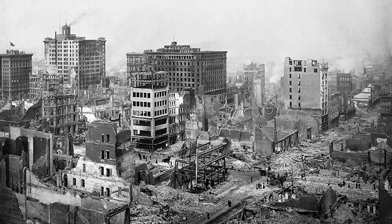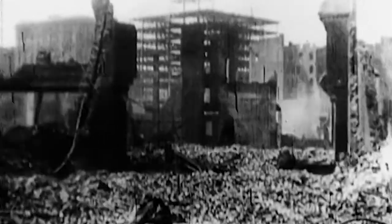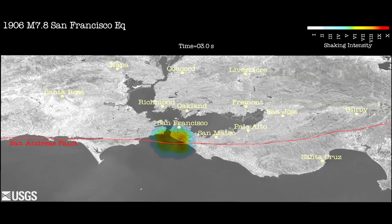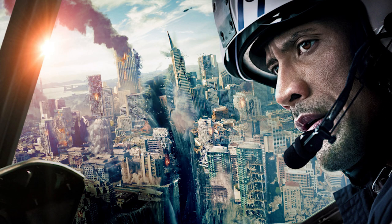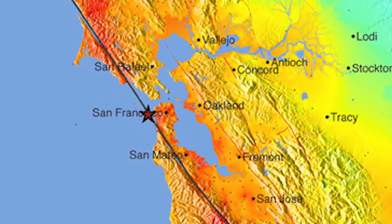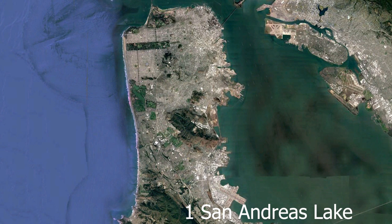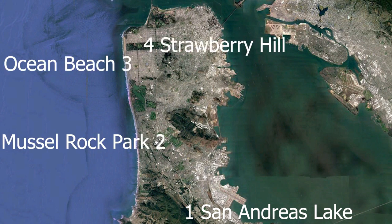The 1906 earthquake and fire leveled San Francisco in one of the worst natural disasters in American history. By its end, over 3,000 people had died, 80% of the city had been destroyed, and several hundred thousand people were homeless. The cause was a sudden movement along the San Andreas Fault, which has become notoriously linked to San Francisco. But the fault doesn't actually go through San Francisco. Here's a virtual field trip of the San Andreas Fault and its effects on San Francisco.